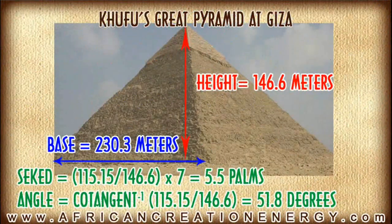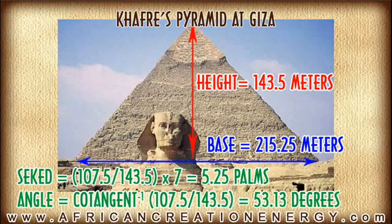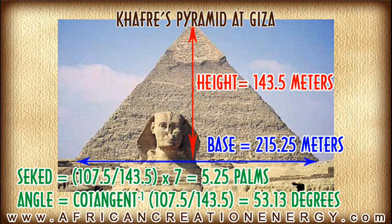Khufu's Great Pyramid at Giza has a height of 146.6 meters and a base of roughly 230.3 meters. The Seqed for this pyramid comes out to be 5.5 palms, which is equivalent to roughly 51.8 degrees. Khafre's pyramid at Giza has a height of 143.5 meters and a base of 215.25 meters; the Seqed comes out to be 5.25 palms, which is roughly 53.13 degrees.